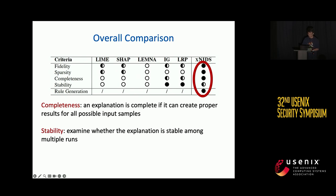We also evaluate the completeness and stability of the explanation. Completeness refers to producing proper results for all possible inputs, and stability examines whether the explanation is stable across multiple runs. If the model gives different results across different runs, it may not be suitable for security applications. To conclude, our method has the best overall performance when compared with the baselines.